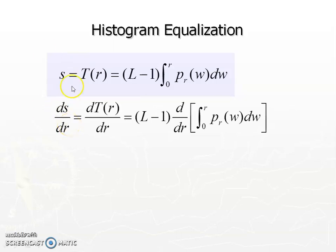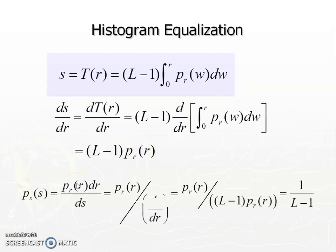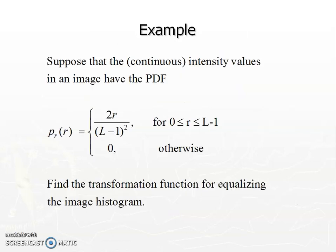To verify that CDF-based transformation achieves uniform output, note that ds/dr = (L−1)·p_r(r). Therefore p_s(s) = p_r(r)·(dr/ds) = p_r(r) / [(L−1)·p_r(r)] = 1/(L−1), which is a constant — confirming a uniformly distributed output. So histogram equalization is achieved by applying the CDF transformation.